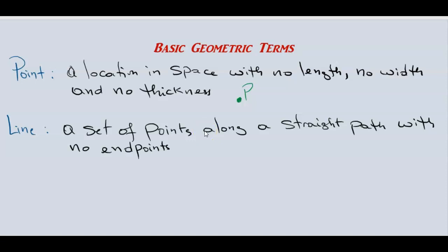A line can be represented by drawing it with an arrow on both sides. The arrow on the left means it goes all the way to negative infinity, and the arrow on the right means it goes all the way to positive infinity — there is no beginning and no end. We can name the line as line L.